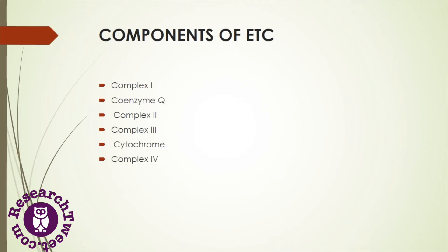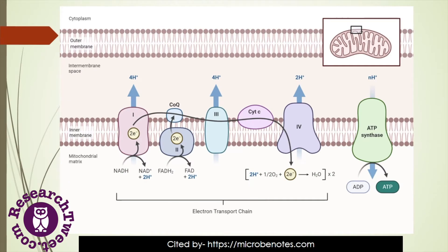The components of the electron transport chain are Complex 1, Coenzyme Q, Complex 2, Complex 3, Cytochrome C, and Complex 4. These complexes are situated in the inner mitochondrial membrane, as shown in the diagrammatic representation.